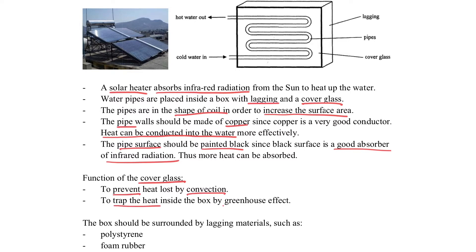Using the cover glass can prevent the heat transfer through conduction and also trap the heat in the box like greenhouse effect. The box lagging will use polystyrene and foam rubber which trap a lot of air inside so that they are good insulators also.